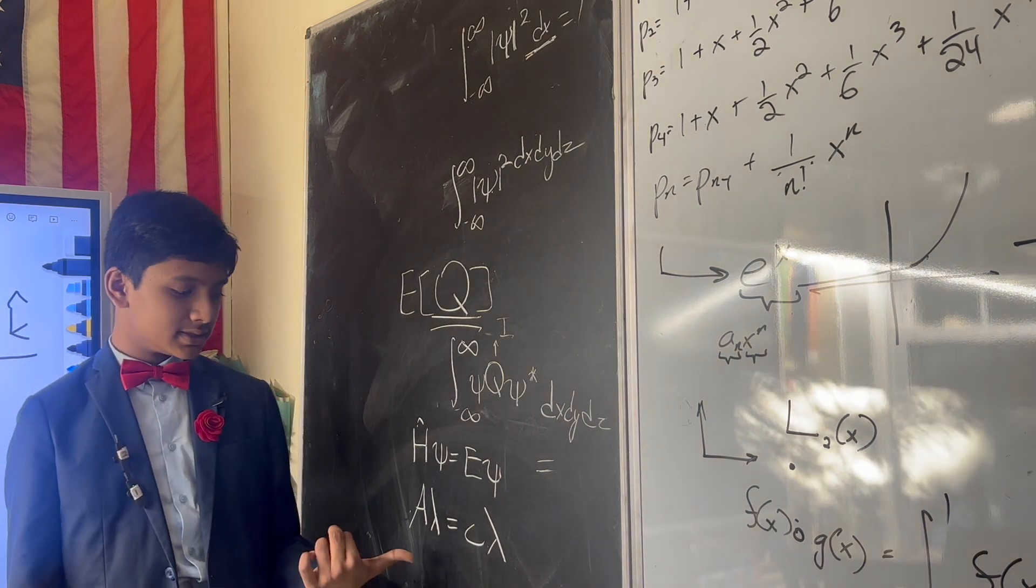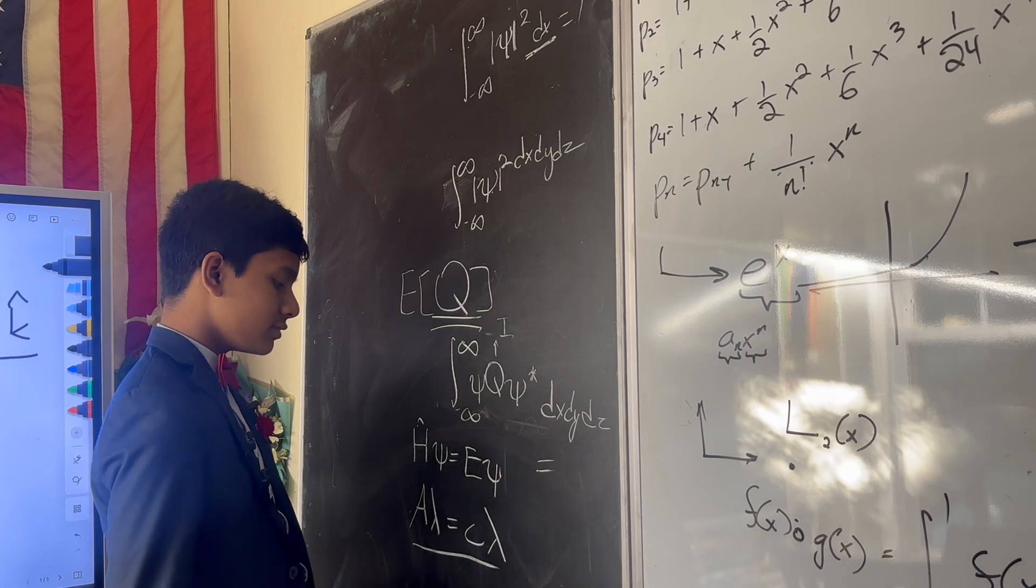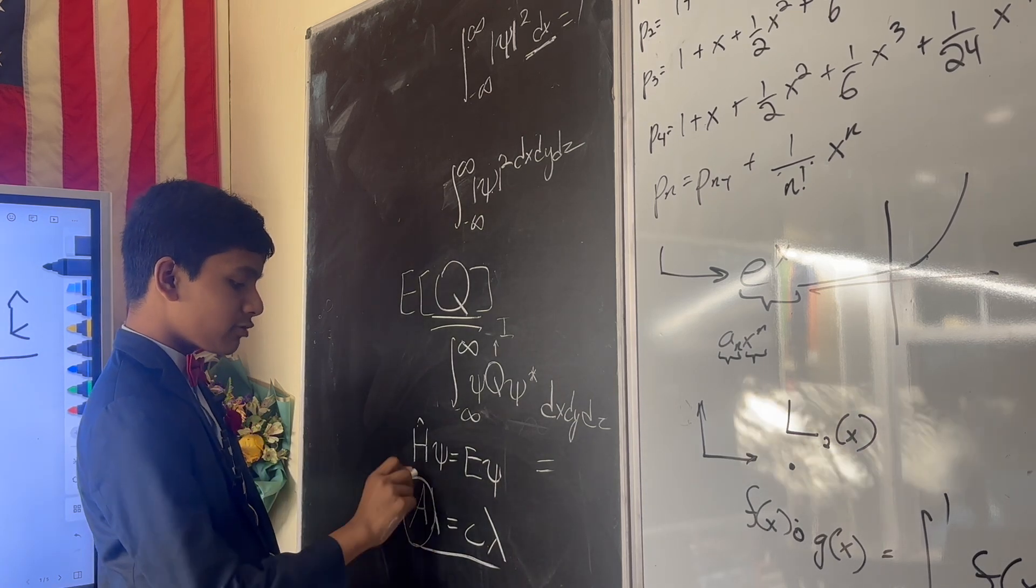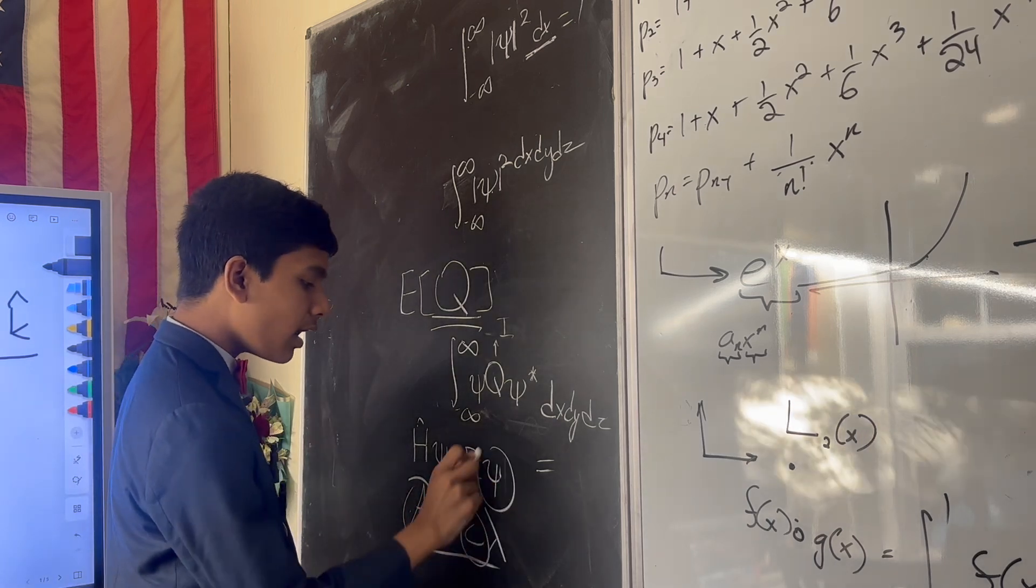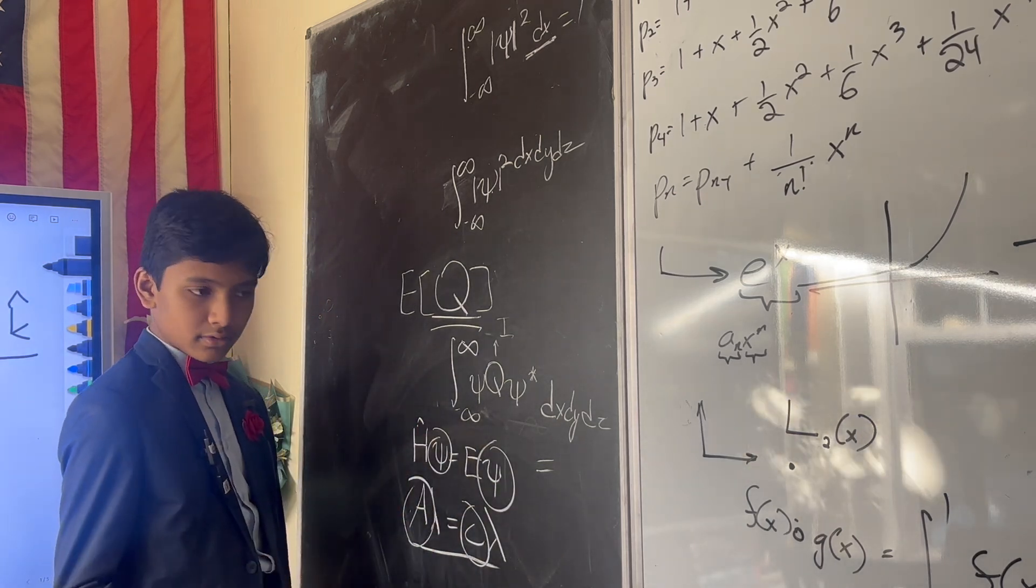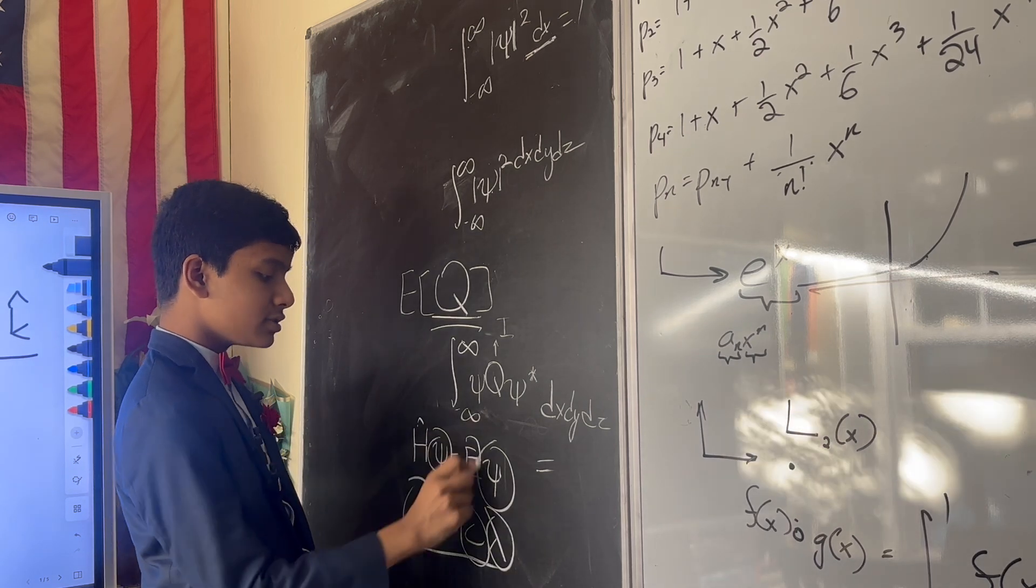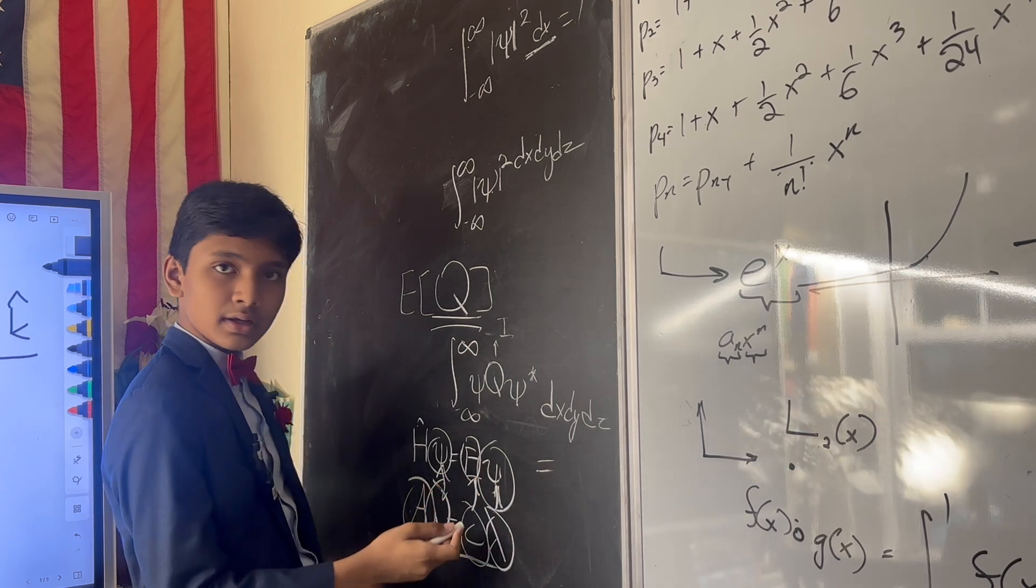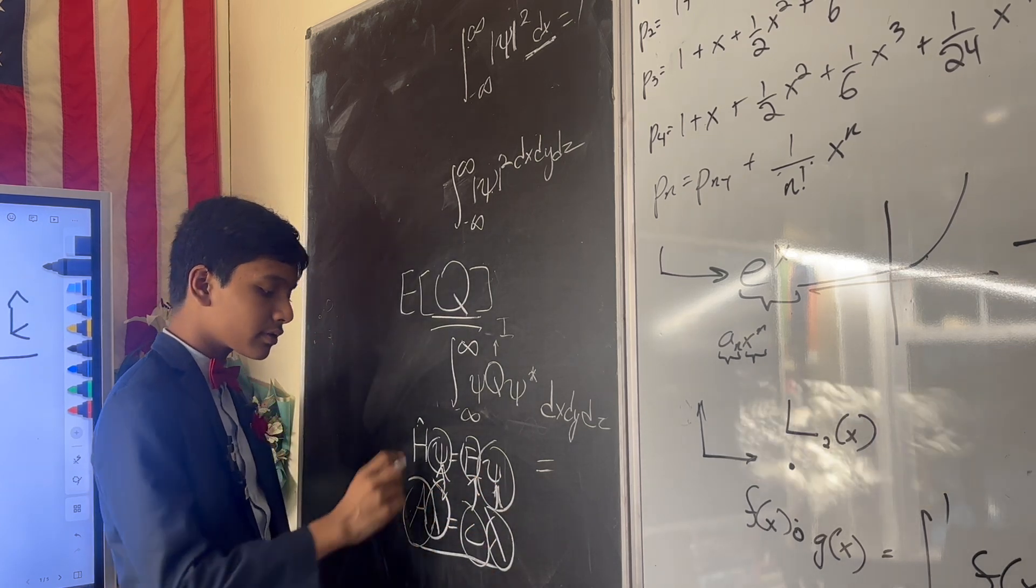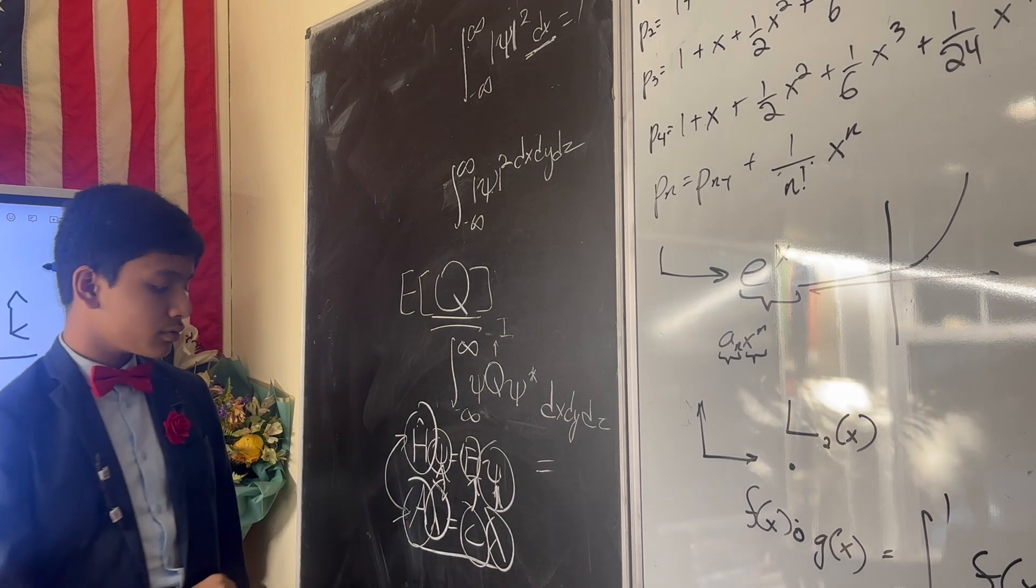Yet, it looks oddly similar to this equation. The equation to find eigenvalue, where A is a matrix and this is a scalar. We already compare psi to a vector, so we identify with this, and so these two identify with each other, these two, these two identify with one another, so it's only natural to start treating the Hamiltonian like A.